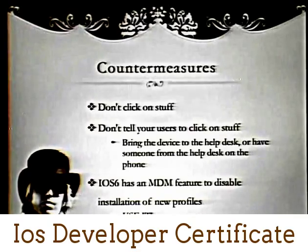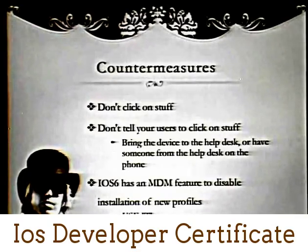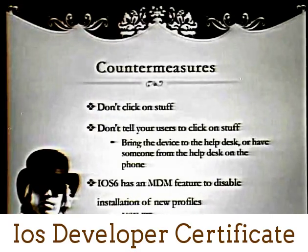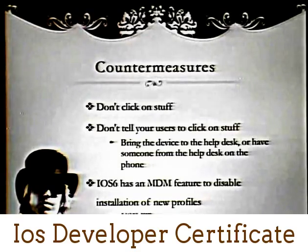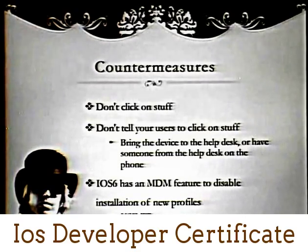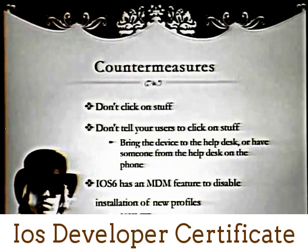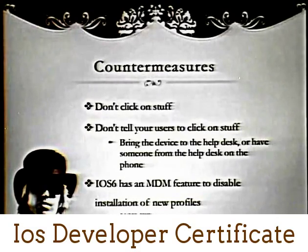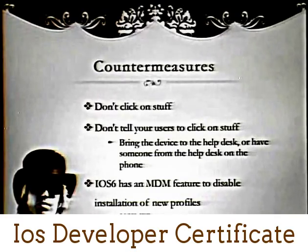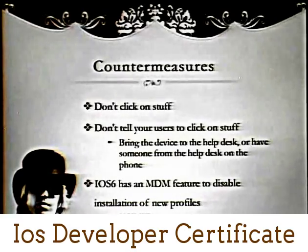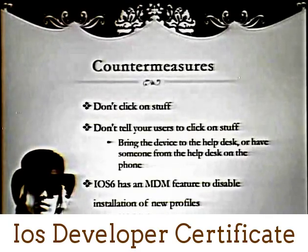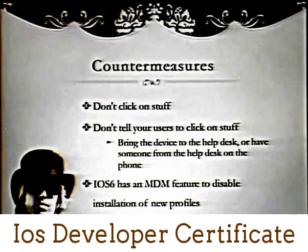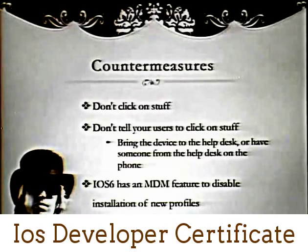So what can we do to protect against that? Well, don't click on stuff. Most of the talks here could be one sentence: don't click on stuff. And don't tell your users to click on stuff either. How many problems exist because users click on things? We should not tell them to randomly click on text messages even though they're 'secure.' Users don't think of their phone the same way as their computer — they think nothing can affect their phone. There's a good feature in iOS 6 through the MDM tools: you can actually say 'do not allow any new profiles to be installed.' That's an effective way to prevent malicious profiles from being installed and messing up your phone.